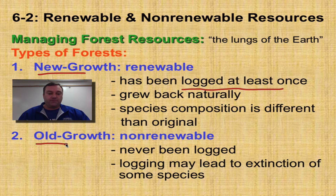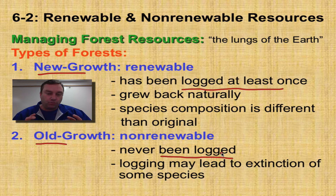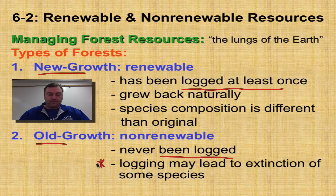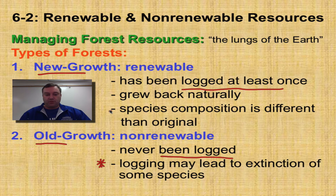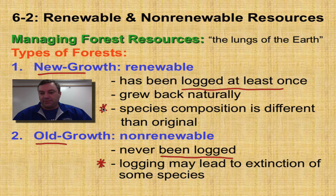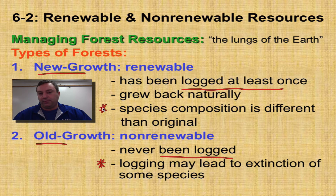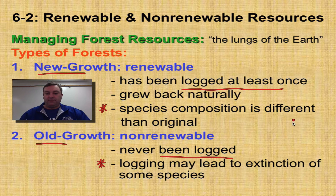Old growth forests have never, ever been logged. When we cut them down, they're no longer old growth — they become new growth forests. The problem with cutting down old growth forests is that it may lead to the extinction of some species, because when the forest grows back, the species composition could be different from the original. Primary and secondary succession comes into play, and you may not get the old species back completely because some could have gone extinct.